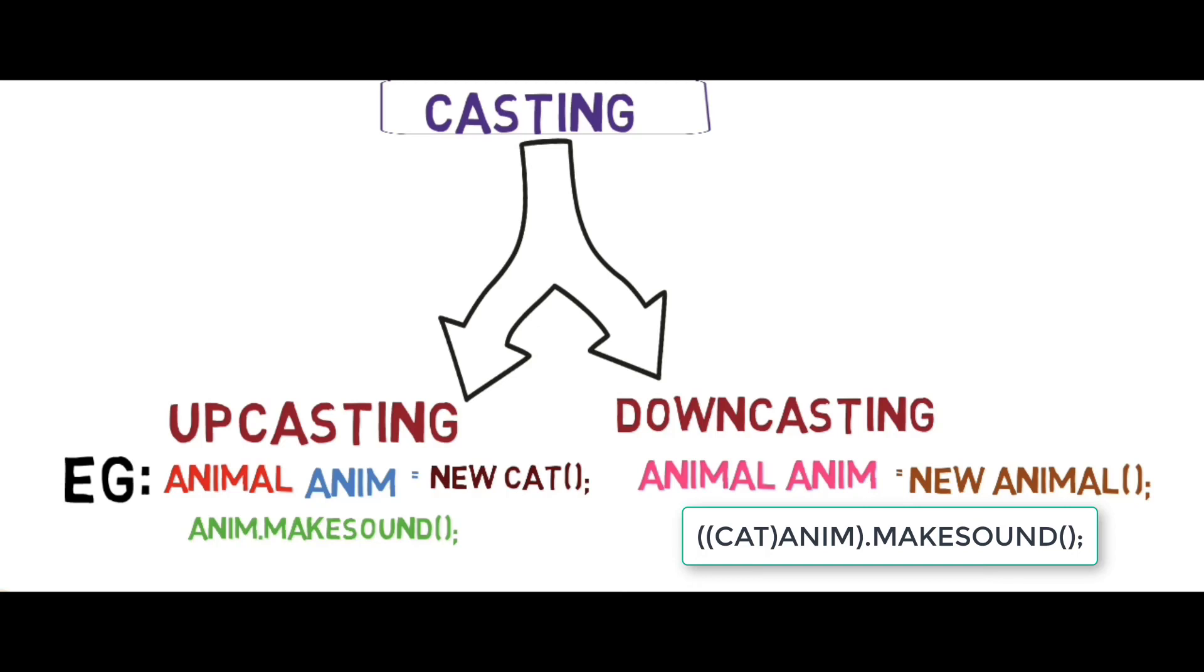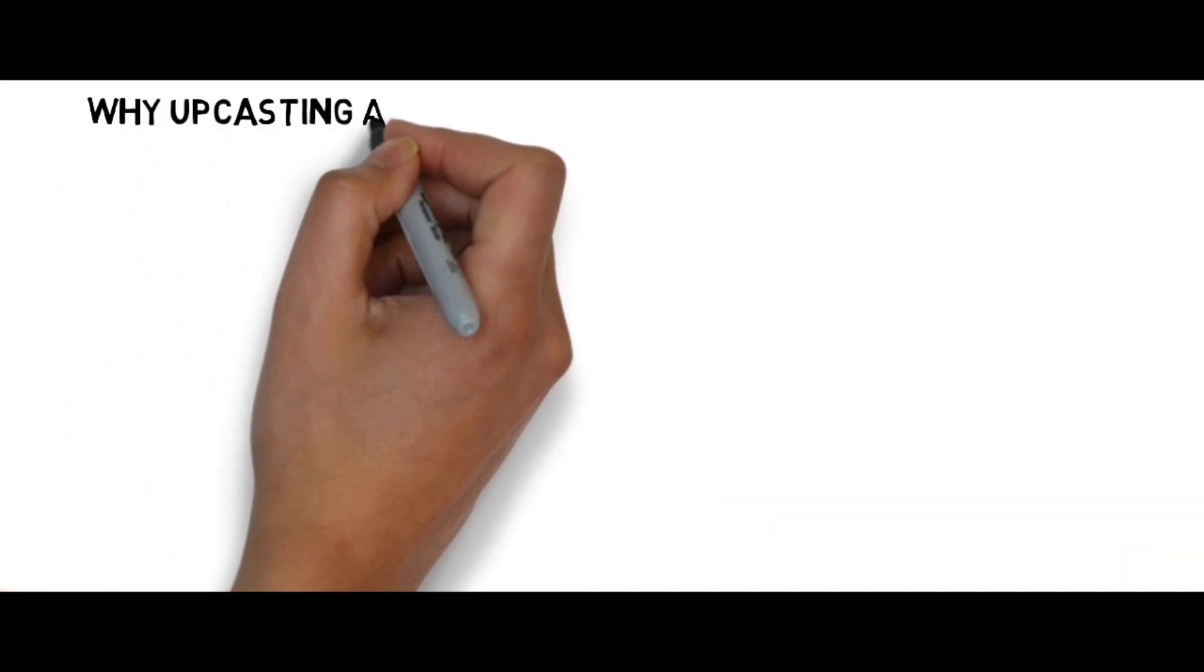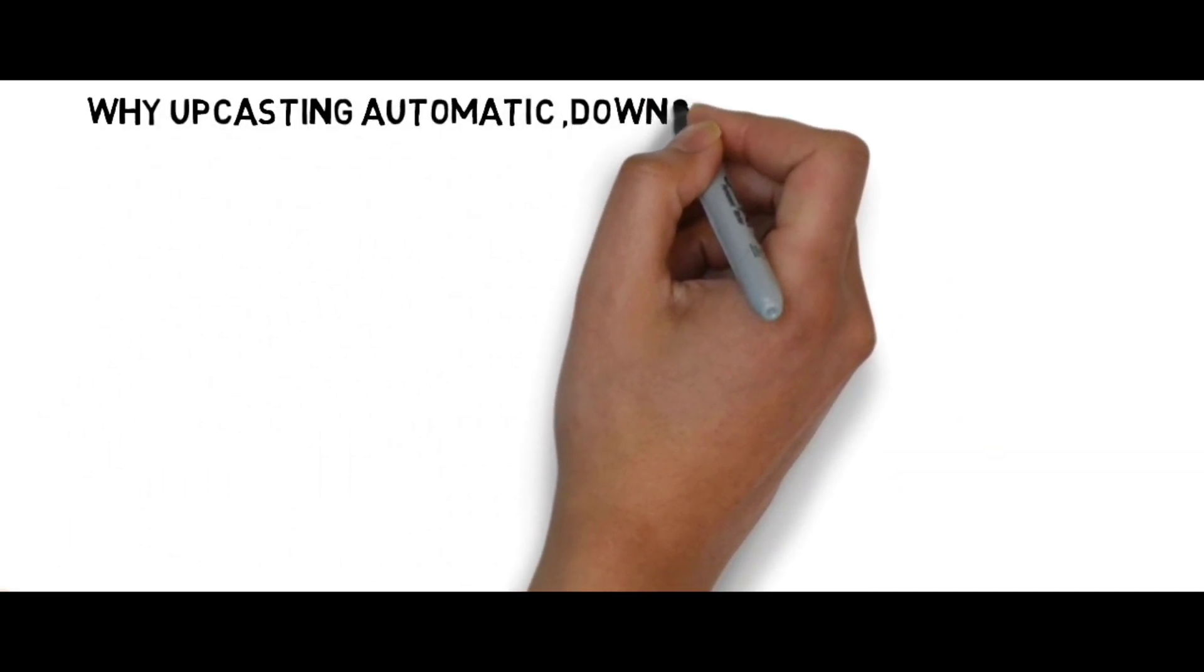We are downcasting the animal class to the cat class. In Java, upcasting is automatic while downcasting is manual.